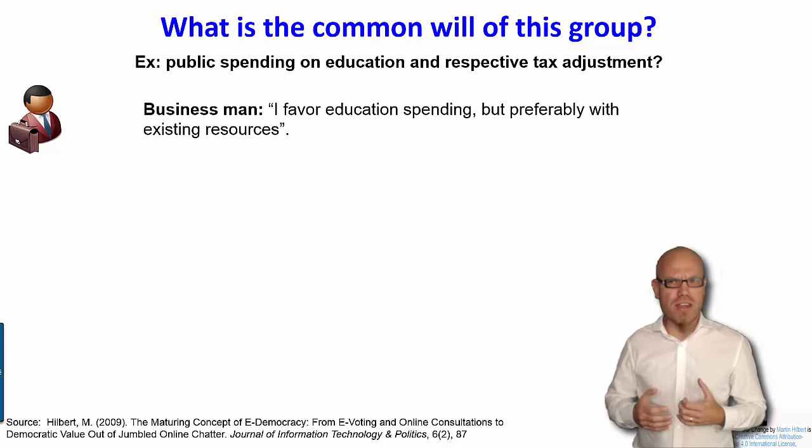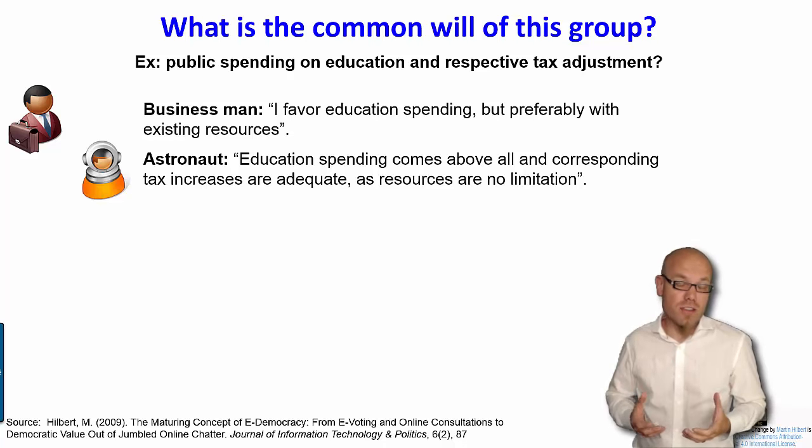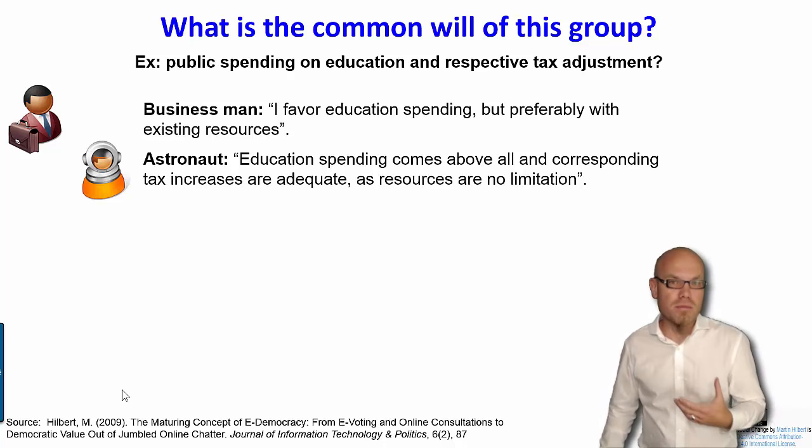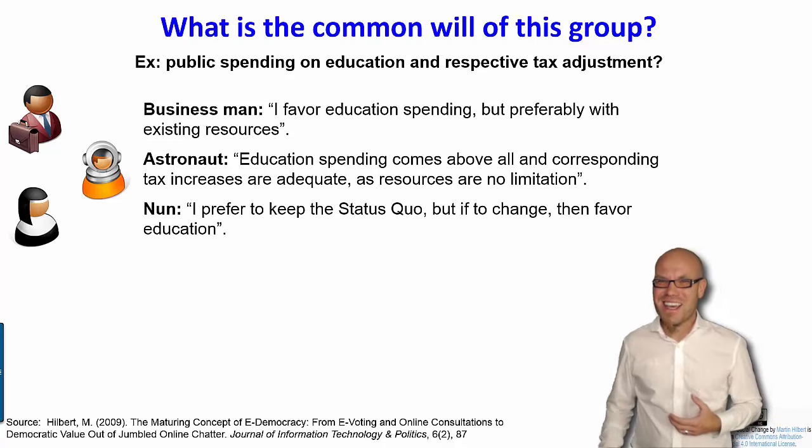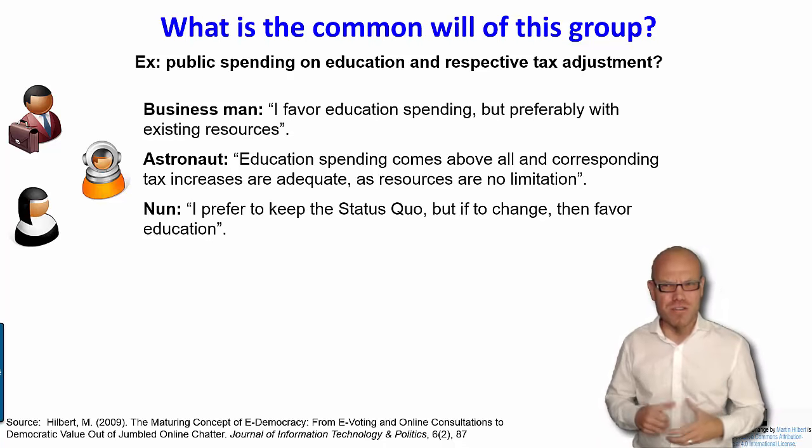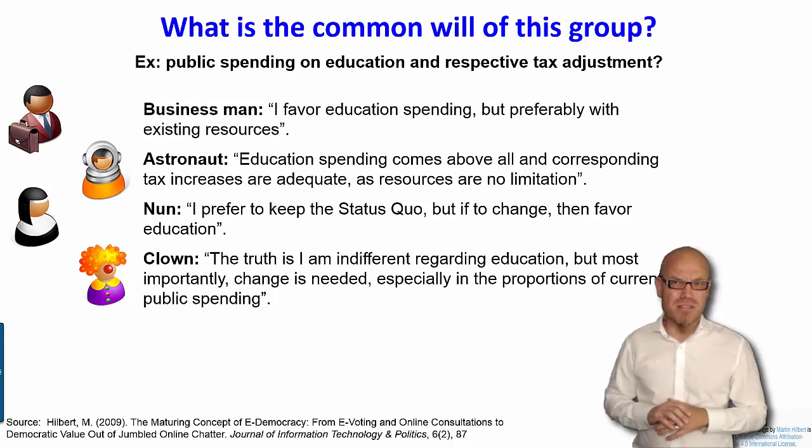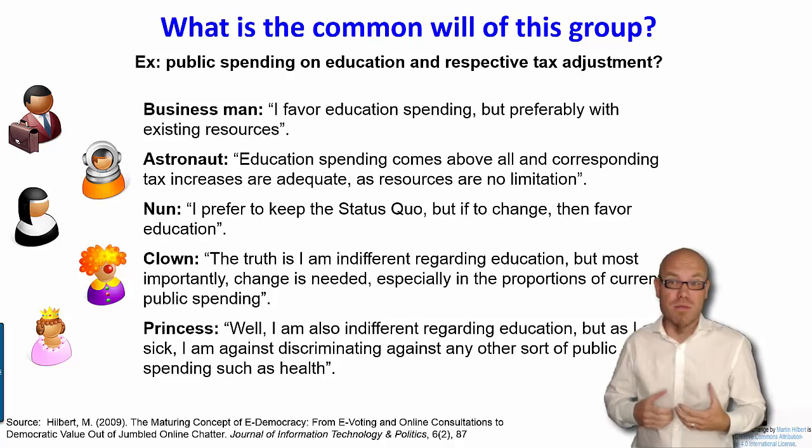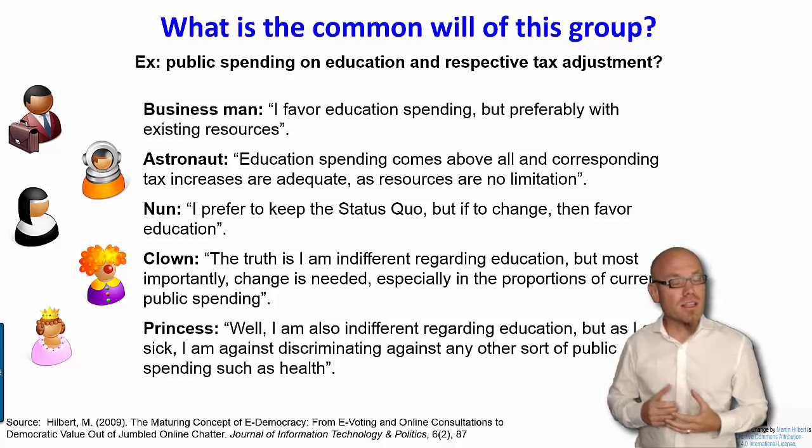The first is a businessman who says, I favor education spending, but preferably with existing resources. The second is an astronaut who says education spending comes above all and corresponding tax increases are adequate. The third one is a nun who says I prefer to keep the status quo, but if to change, then she would favor education. The clown says I'm completely indifferent regarding education, but most importantly, change is needed, especially in the proportion of current public spending. And the fifth one is a princess who says I'm also indifferent regarding education, but as I'm sick, I'm against discriminating against any other sort of public spending such as health.